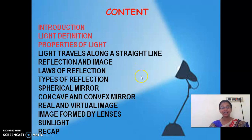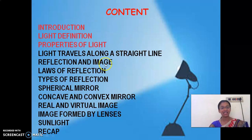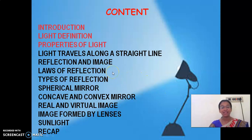These are all the contents of this lesson: introduction, definition of light, properties of light — up to this you will be having no problem. Then light travels along a straight line, reflection and image, laws of reflection — this is not there in the book but it is very important. Then types of reflection, spherical mirror, concave and convex mirror, real and virtual image, image formed by lenses, and lastly sunlight. And we have a recap.